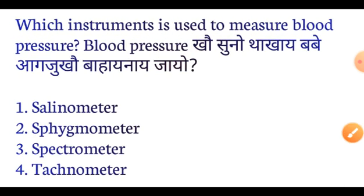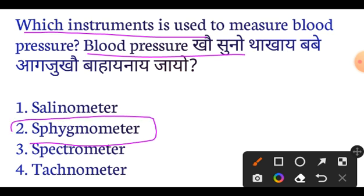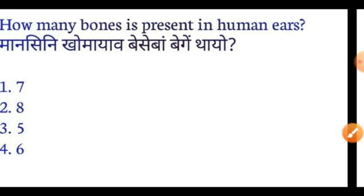Next question: Which instrument is used to measure blood pressure? The answer is Sphygmomanometer. The Sphygmomanometer is used to measure blood pressure. Next question.